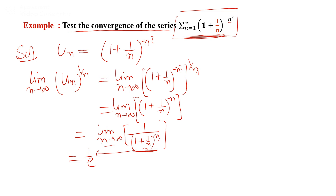This can be written as 1 / [(1 + 1/n)^n]. Since the limit as n→∞ of (1 + 1/n)^n = e, we get 1/e. The value of e is greater than 1, so 1/e is less than 1. Therefore lambda = 1/e < 1.